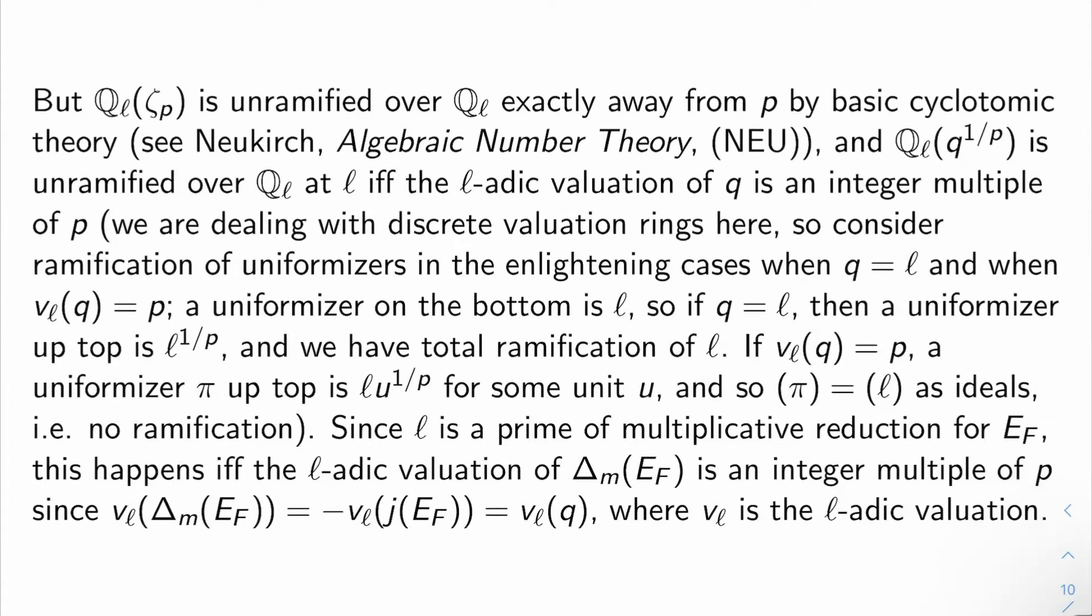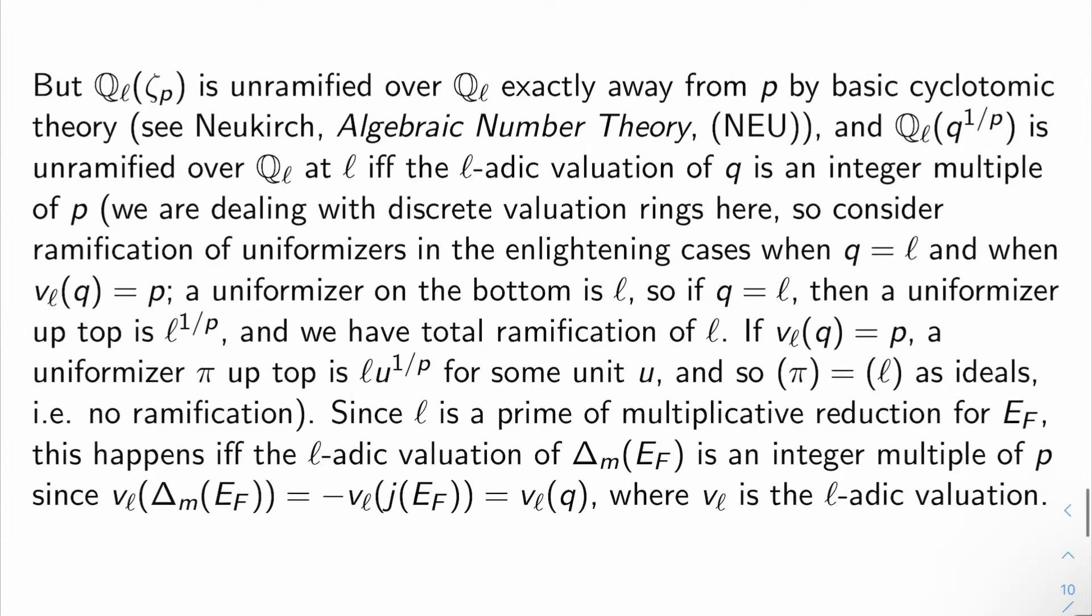We're dealing with discrete valuation rings here, so things are kind of easy. You just really have to consider ramification of uniformizers in a couple of enlightening cases. So, one case would be maybe when q is l, and another case would be when the l-adic valuation of q is just p. A uniformizer on the bottom, so in Q_l, is just l. So, if q is l, in this case, a uniformizer up top is l^(1/p). So, I have complete and utter ramification of l in this case, which is what I said was going to happen. In the other case, if the l-adic valuation of q is p, a uniformizer π up top is just l times u^(1/p) for some unit u, but then the ideal generated by π is the ideal generated by l. In other words, there's no ramification. So, these toy cases essentially say exactly what I was trying to tell you.